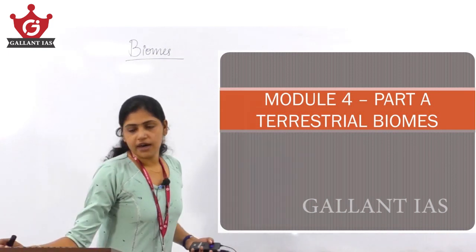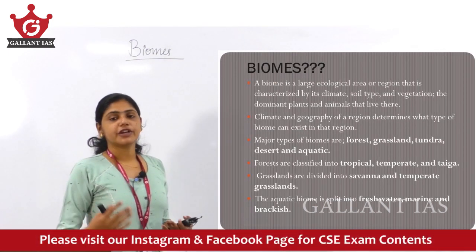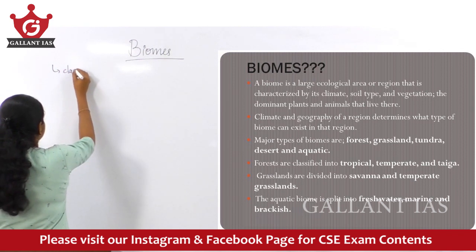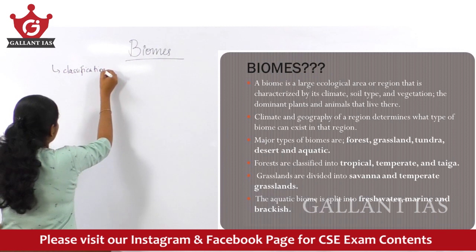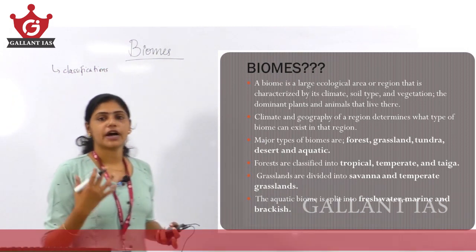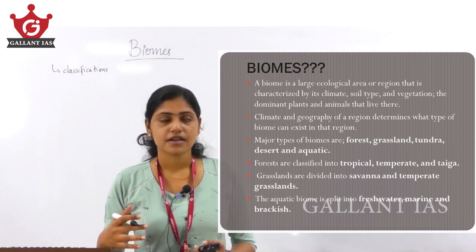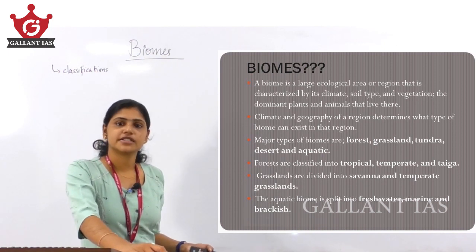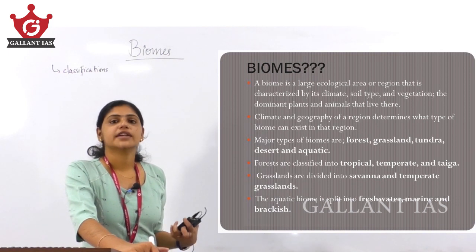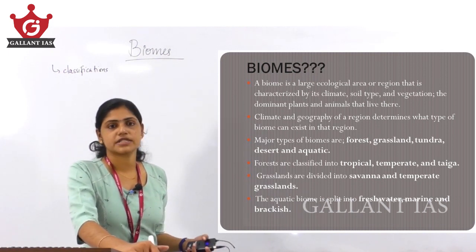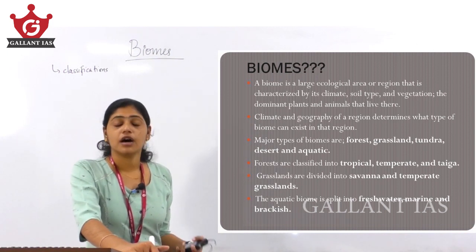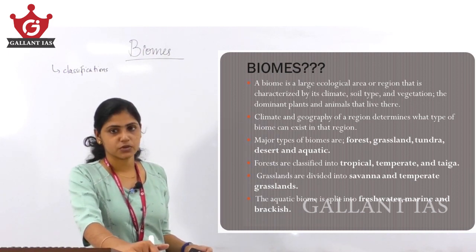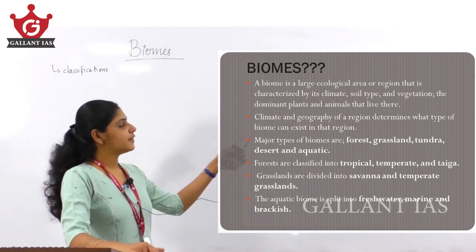When we study the different classifications of biomes, we have forest, grasslands, tundra, desert, and aquatic biomes. Broadly, we can say there are terrestrial biomes and aquatic biomes. You need to know all the classifications under terrestrial biomes — forest, grasslands, tundra, desert — and then the different classifications under aquatic biomes.